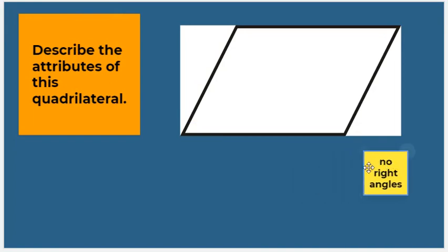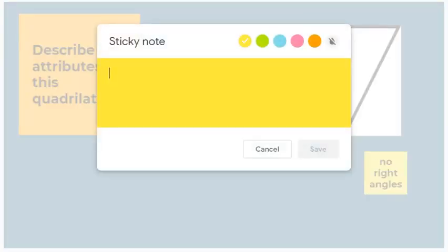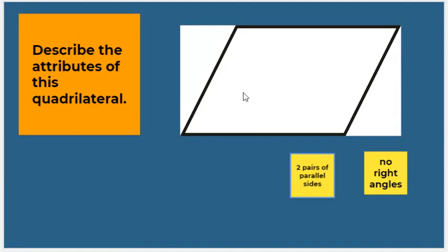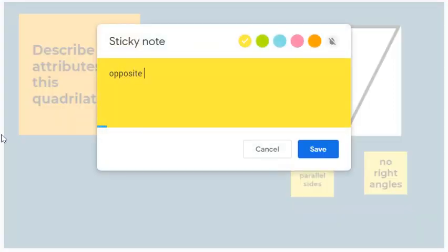What else can we say? Does it have any pairs of parallel sides? Well, these two sides appear to be parallel, and the top and bottom appear to be parallel, so we're going to say it has two pairs of parallel sides. Does it have any equal sides? Yes — these two are equal and these two are equal, so opposite sides are equal.